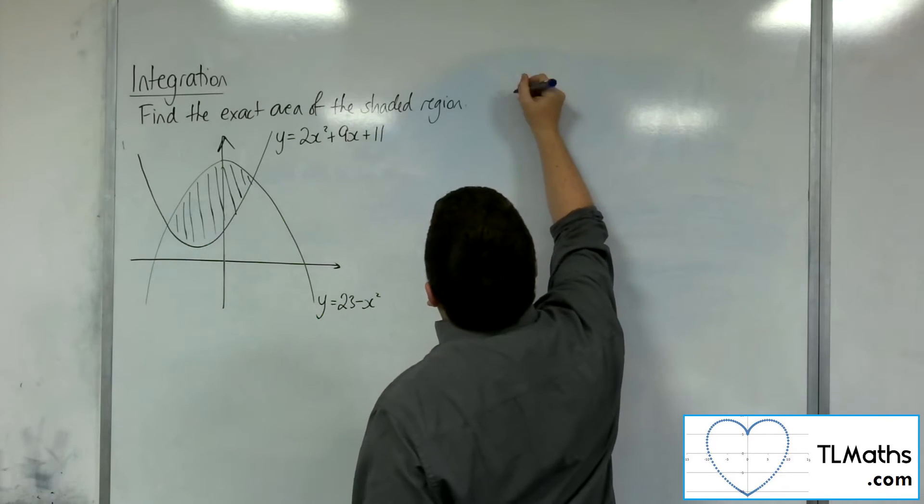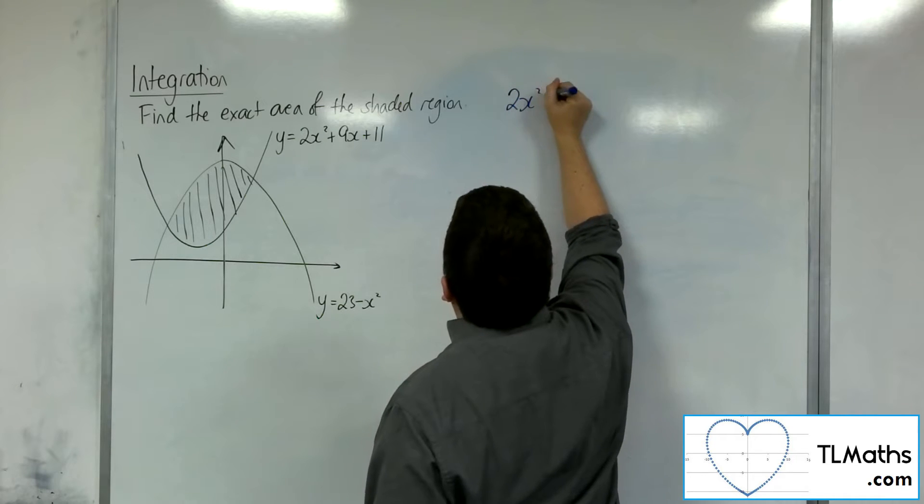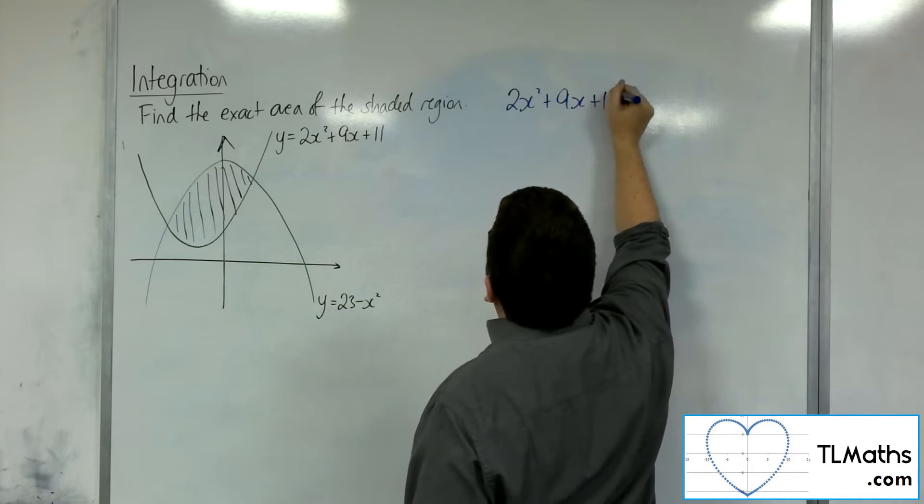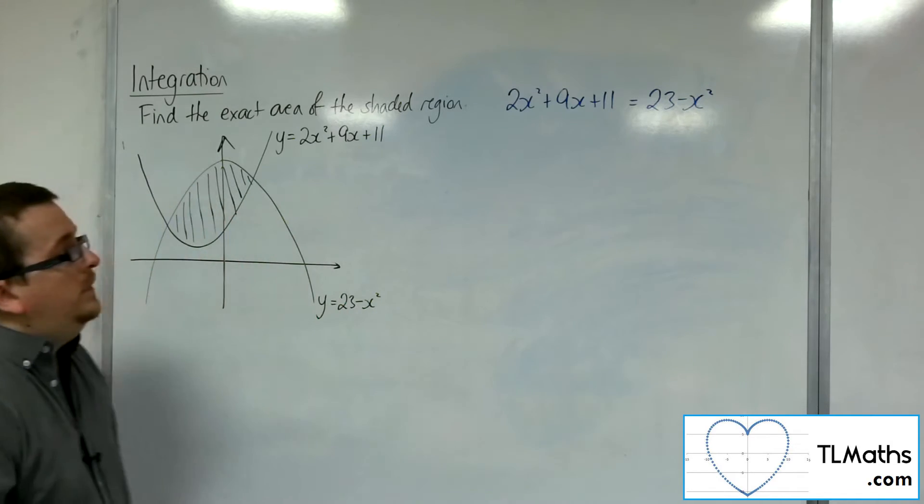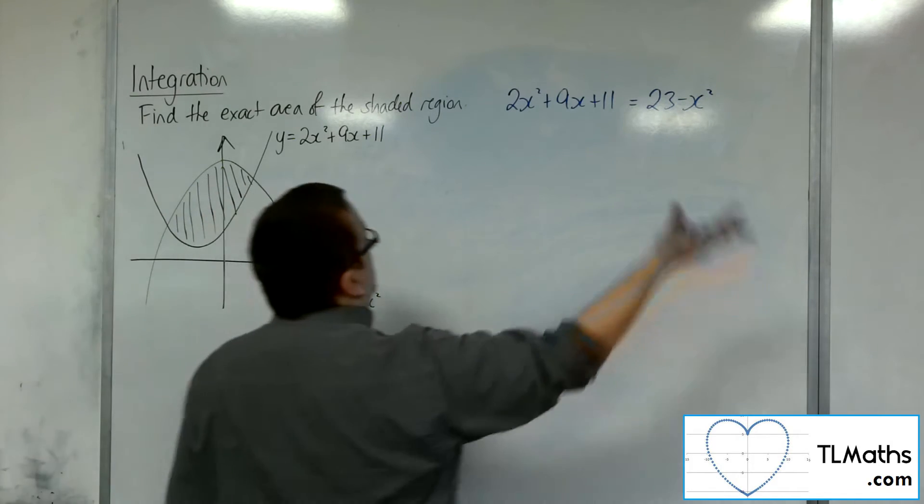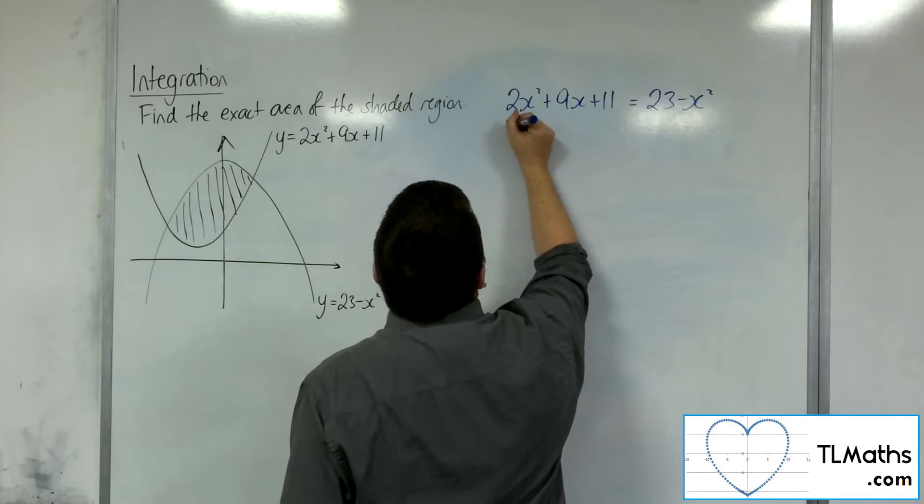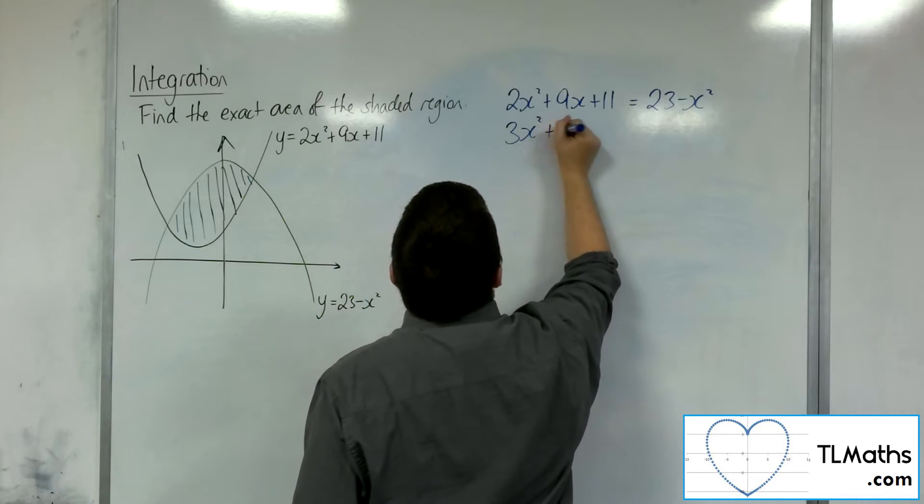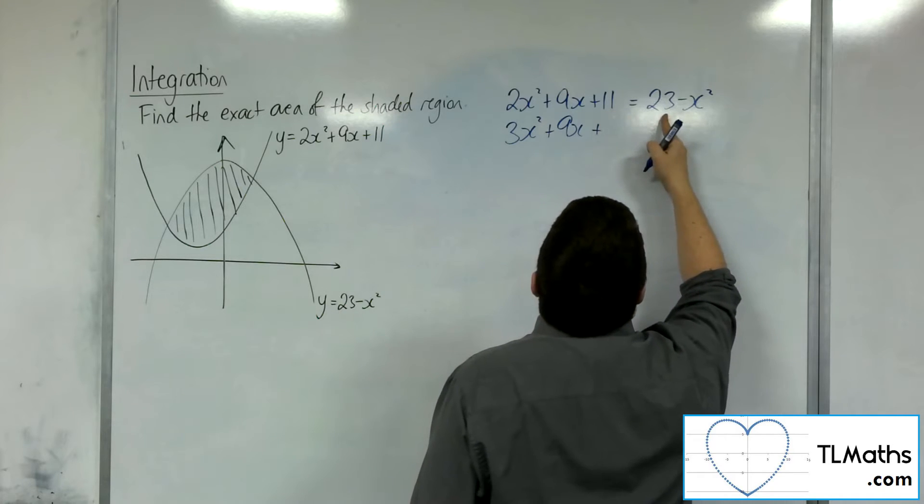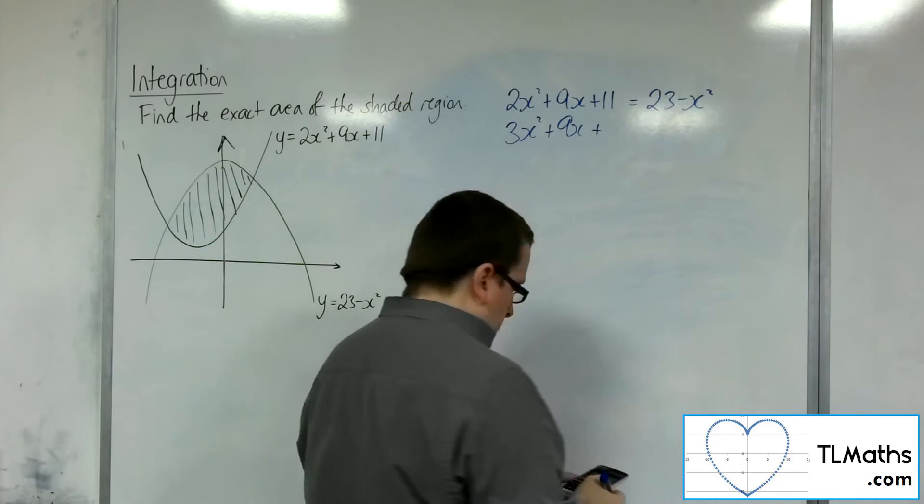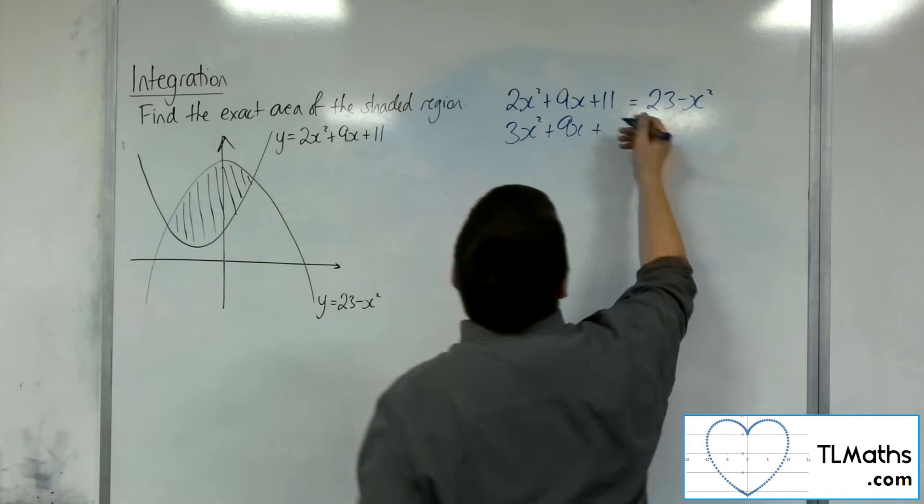So I'm going to put one equal to the other, so 2x squared plus 9x plus 11 is equal to 23 minus x squared. So if I add the x squared to both sides, I'm going to move everything onto the left hand side. So we're going to have 3x squared plus 9x plus 11 take away 23, minus 12.